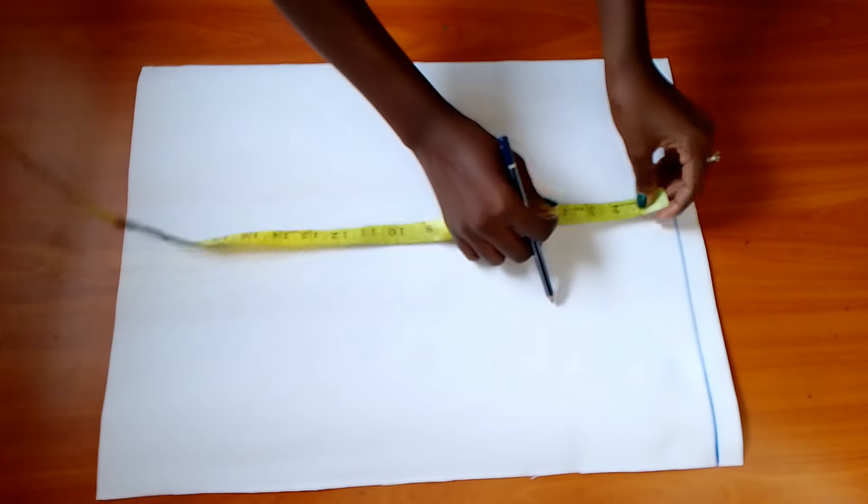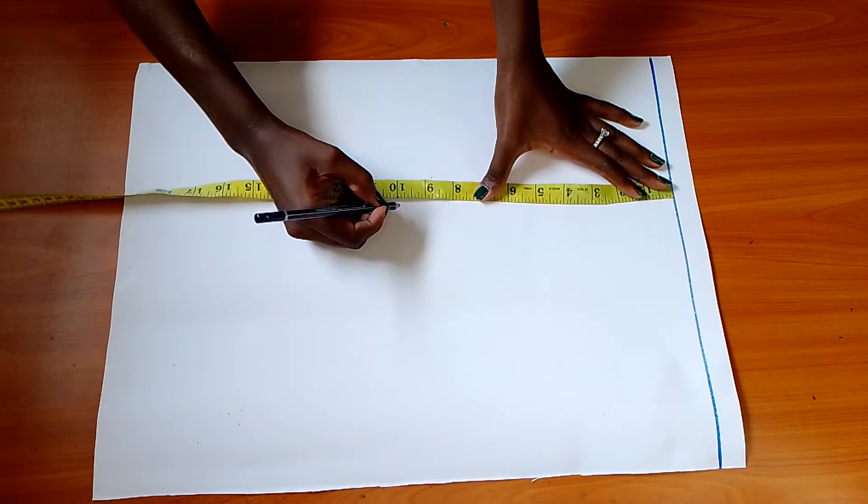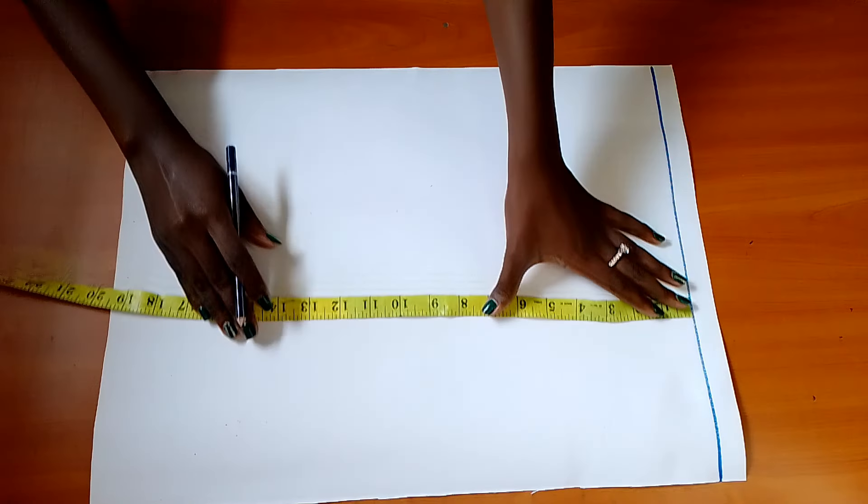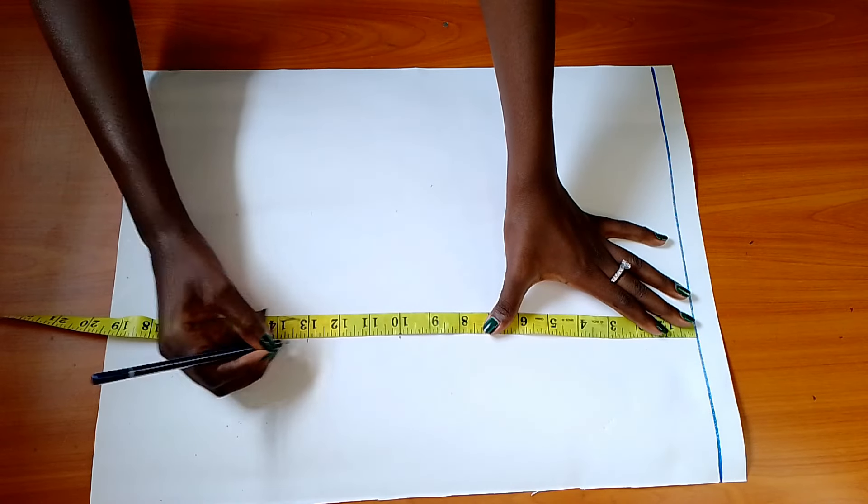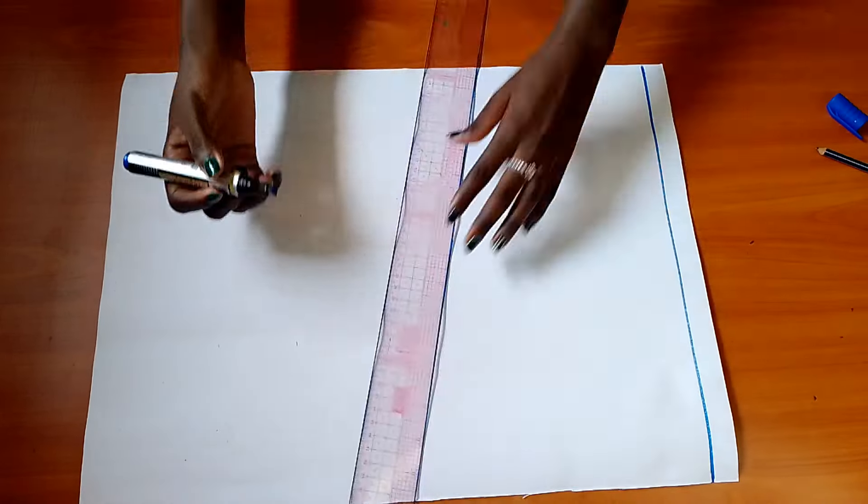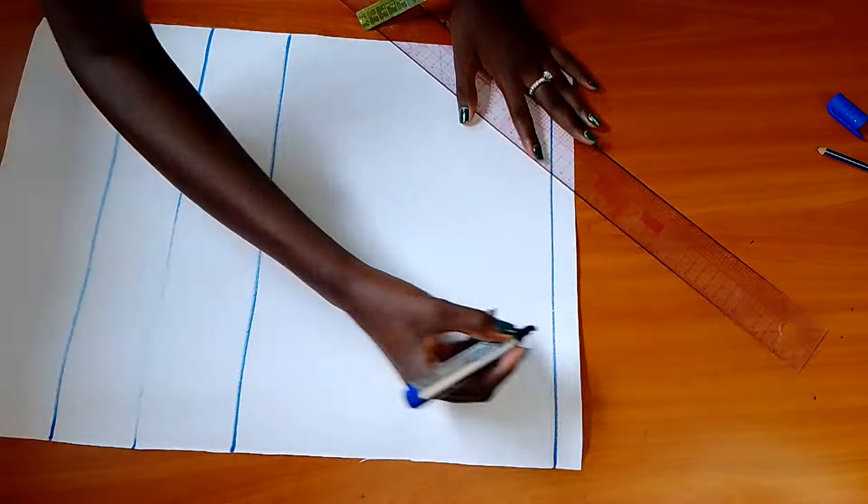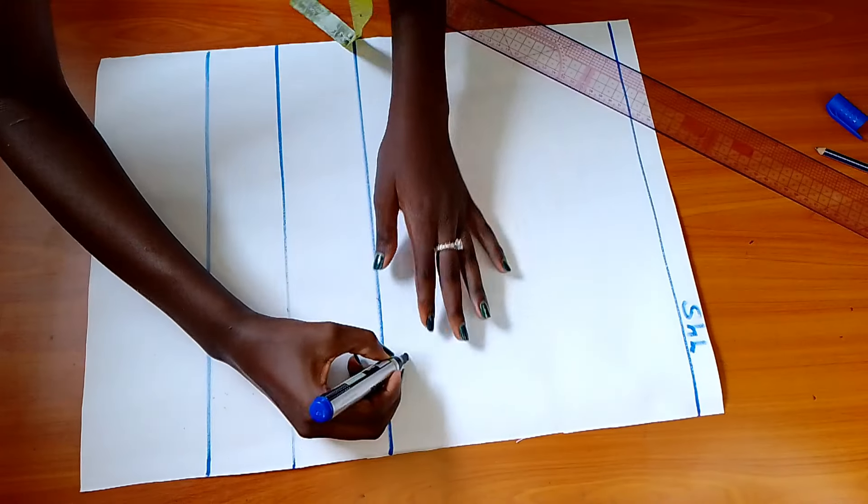To start front bodice drafting, take shoulder line to bust line measurement first, next is to under bust line, and lastly shoulder line to waist line. Repeat same on the side to achieve straight horizontal lines which you'll square out.